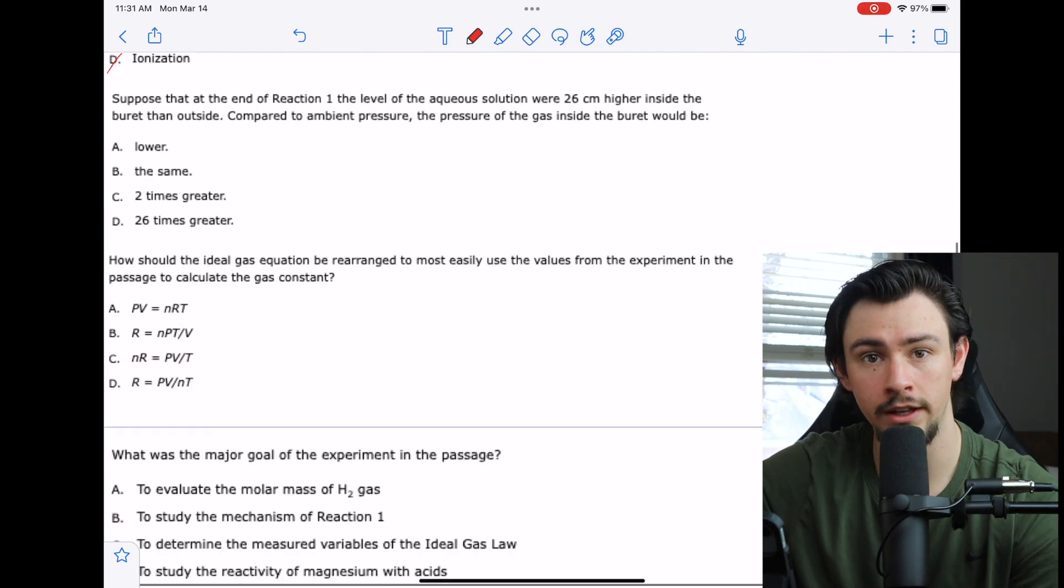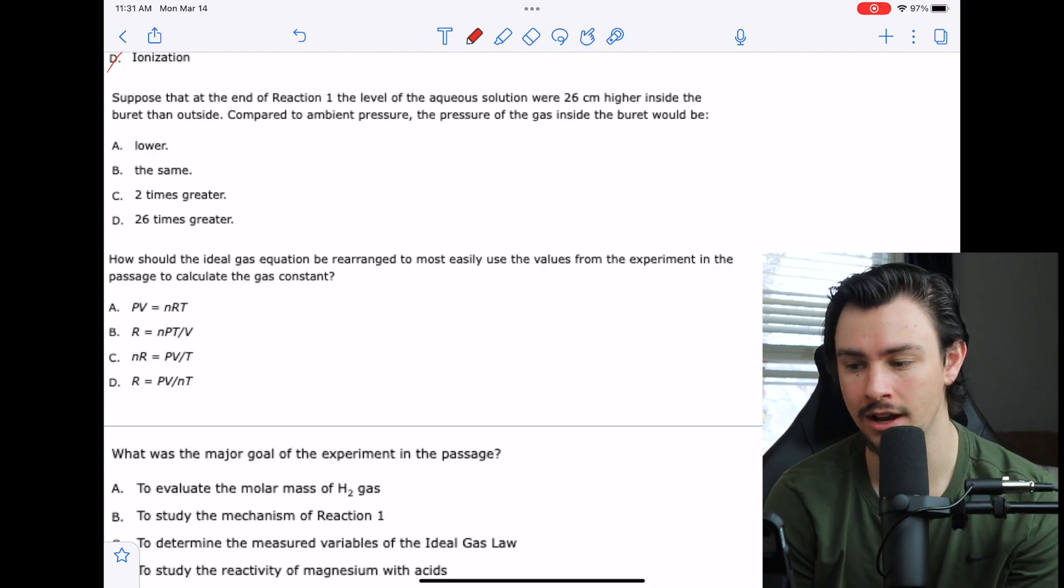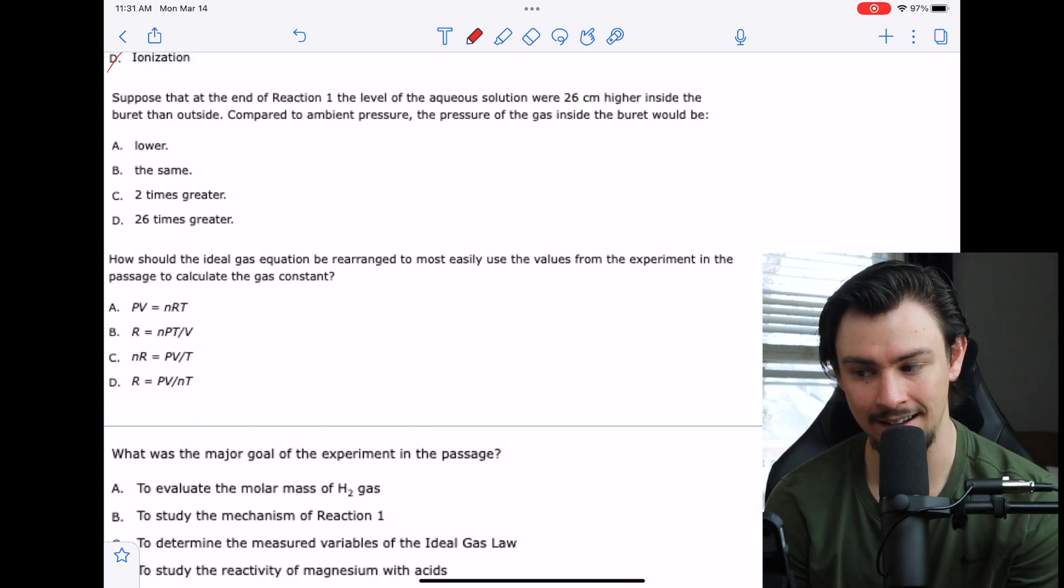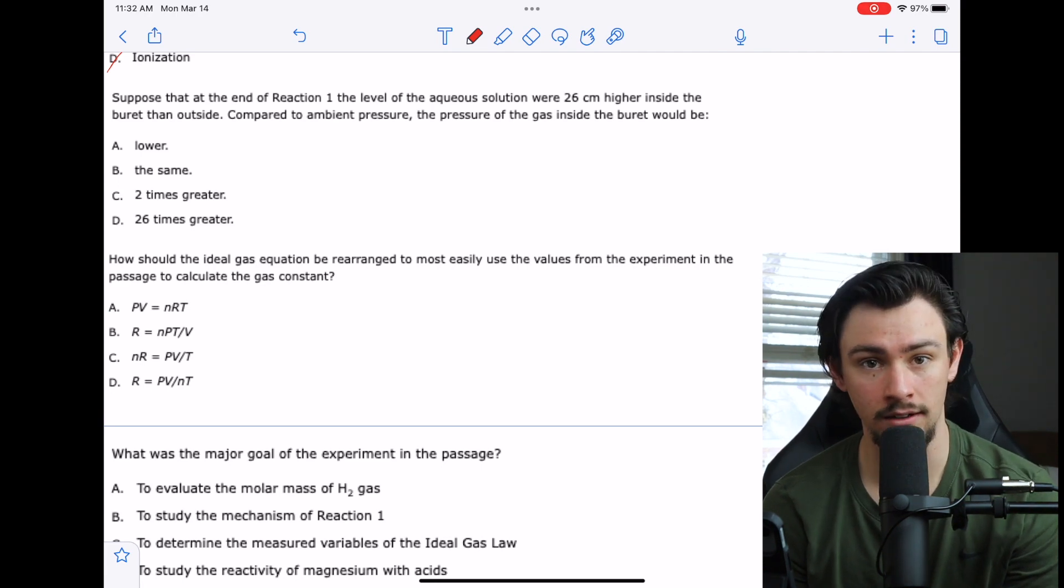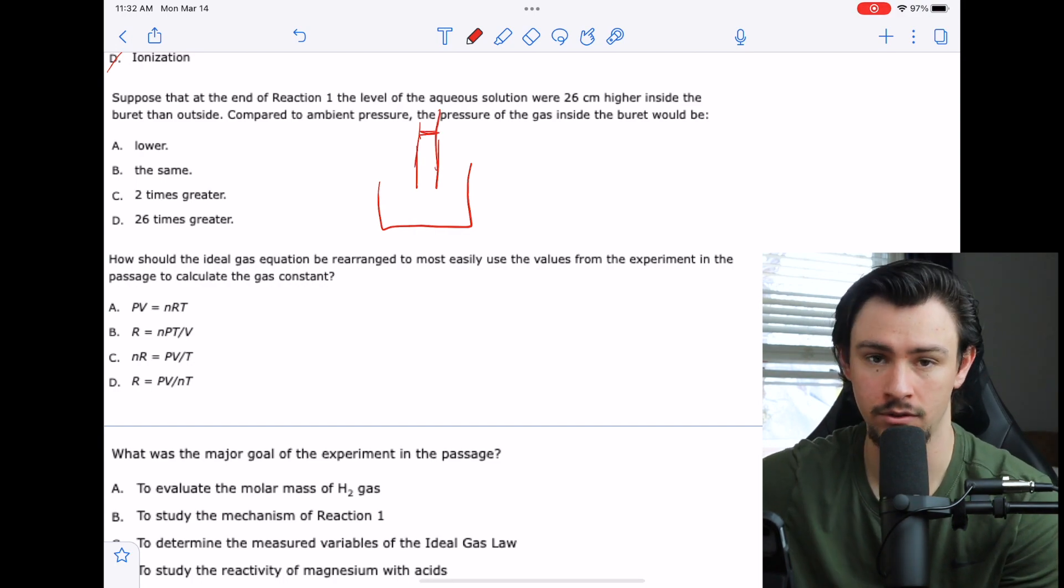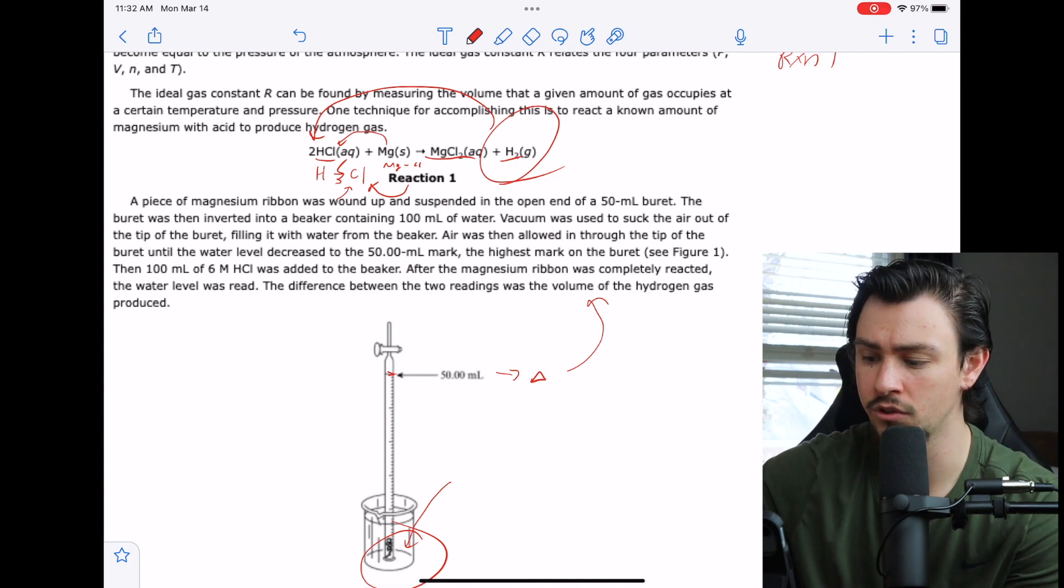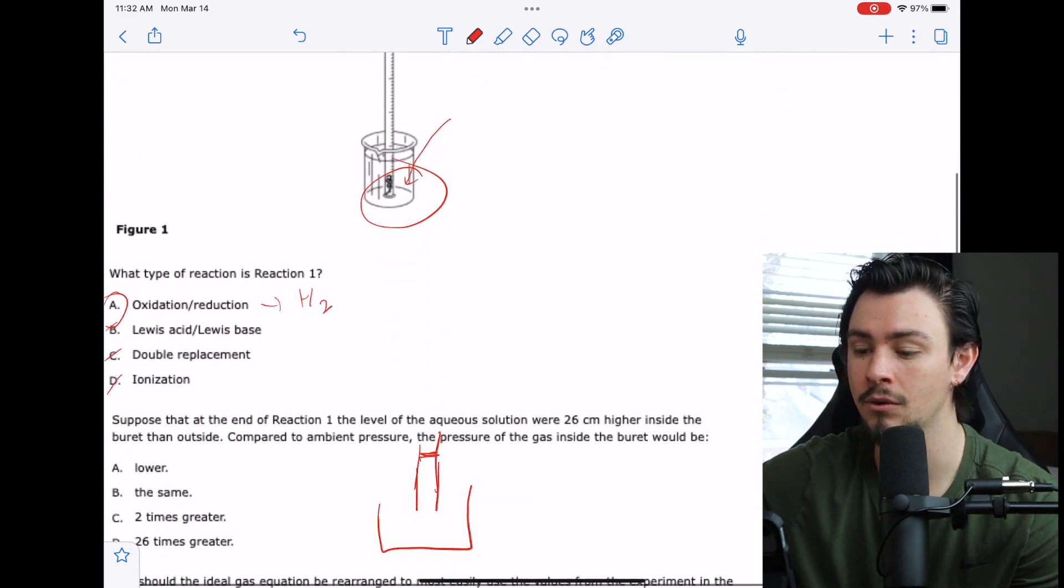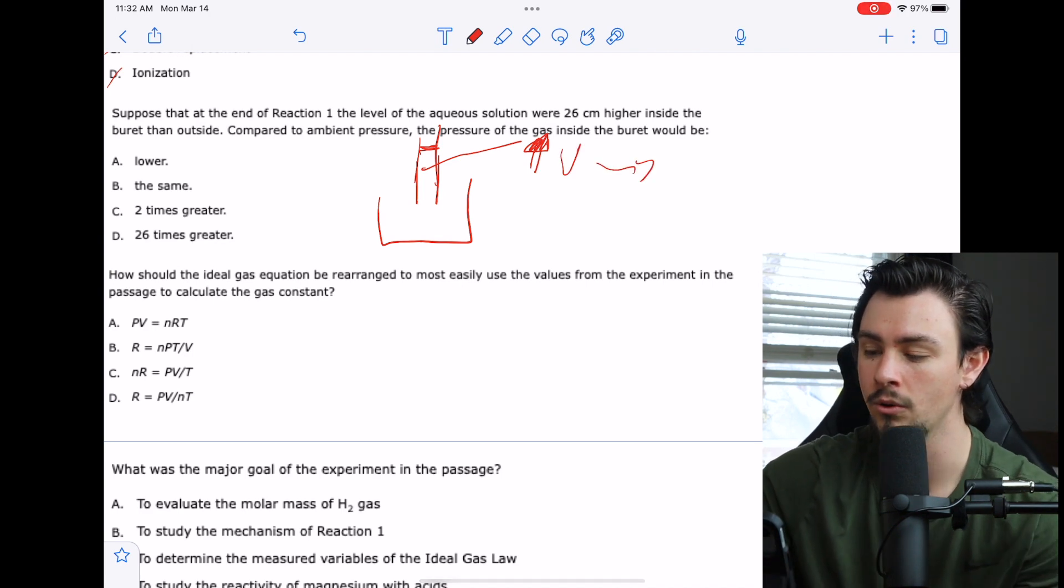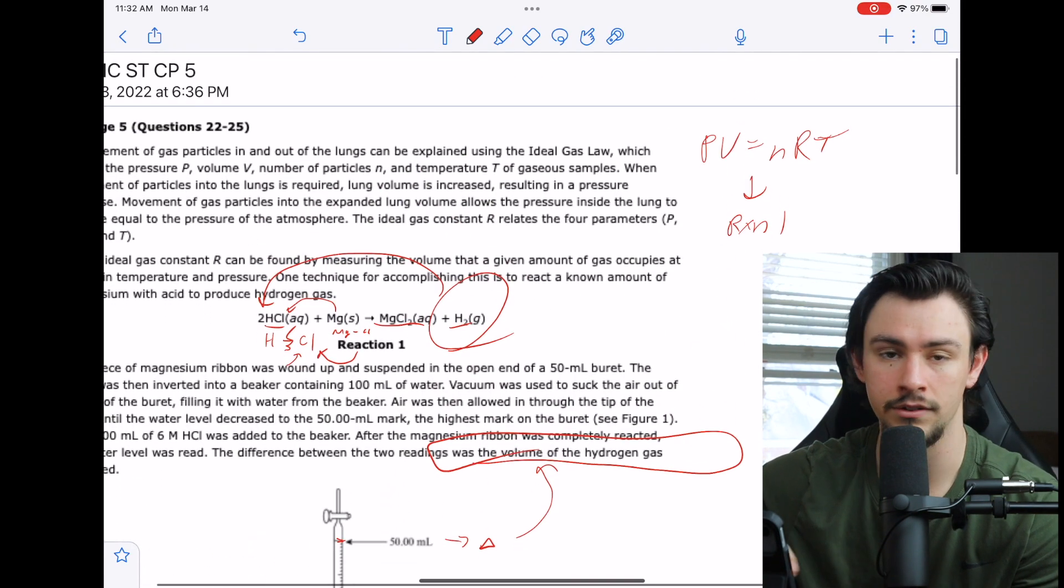Number 23 says, suppose at the end of reaction one, the level of the aqueous solution were 26 centimeters higher inside the burette than outside compared to ambient pressure. The pressure of the gas inside the burette would be what? If that confused you, draw it out. We have this burette and then we have this beaker. They said that after the reaction, we're going to raise the level. Remember when we went through the passage, we saw that if we increased the level or decreased the level, it was due to hydrogen gas, the volume of hydrogen gas. So that means that we have an increased volume inside of the burette. What do we know that means for our pressure? Increased volume is equal to decreased pressure, as long as you're keeping all this the same.